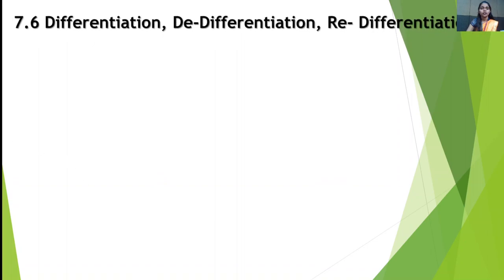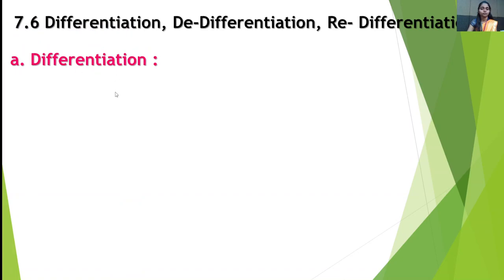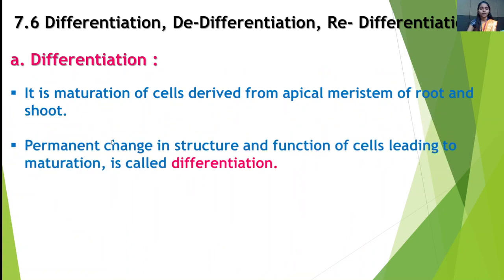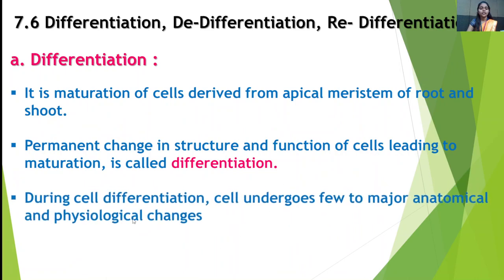The next point is differentiation, de-differentiation and re-differentiation. First, differentiation: it is the maturation of cells derived from the apical meristem of root and shoot. Permanent changes in the structure and function of a cell leading to maturation is called differentiation. During cell differentiation, the cell undergoes few to major anatomical and physiological changes.